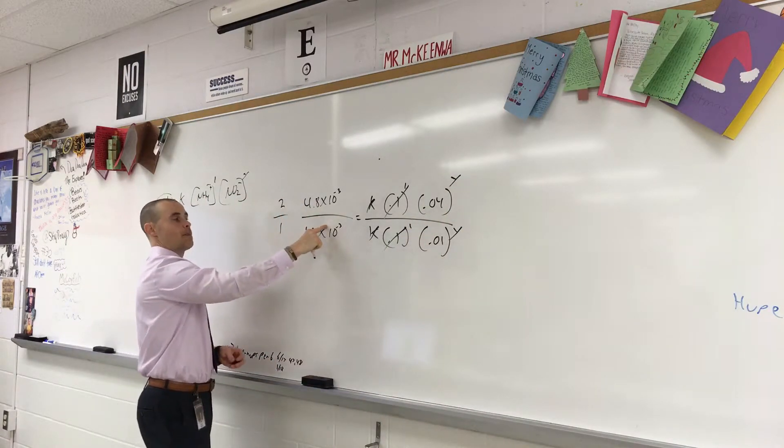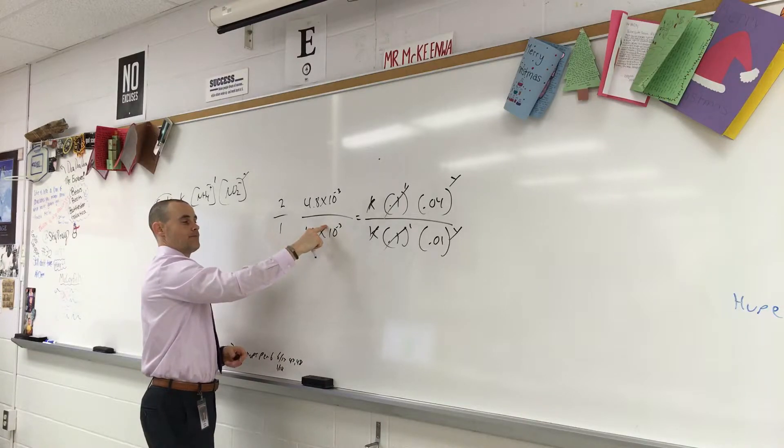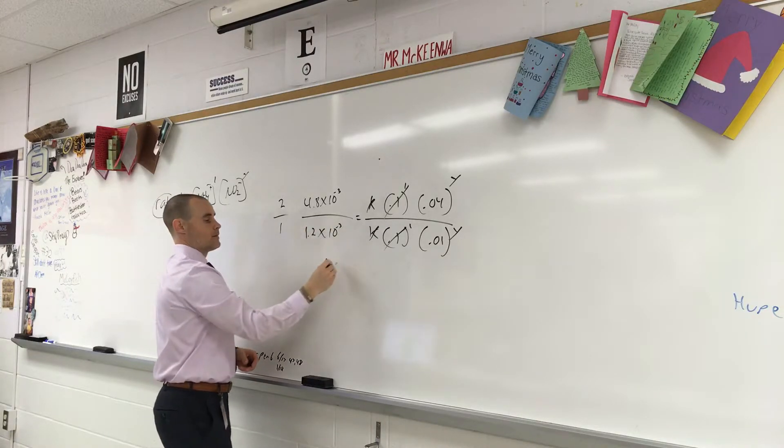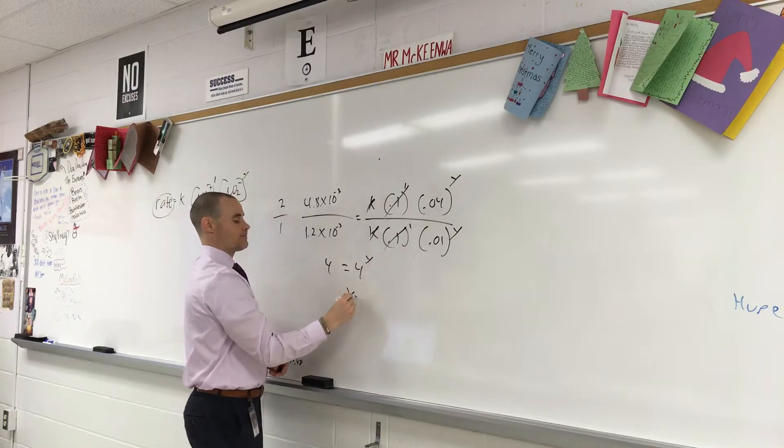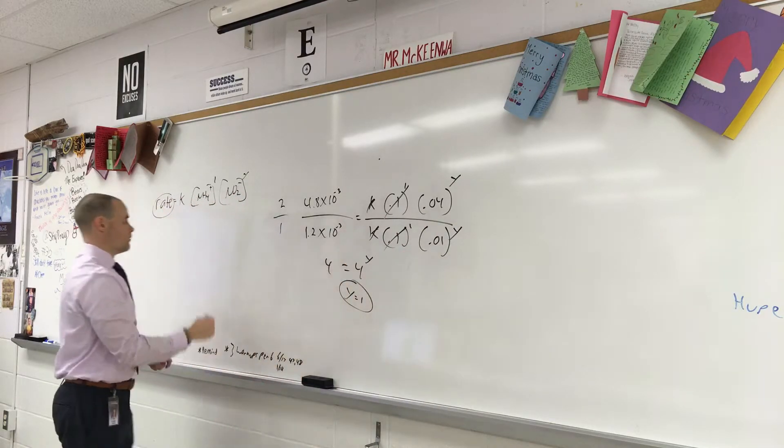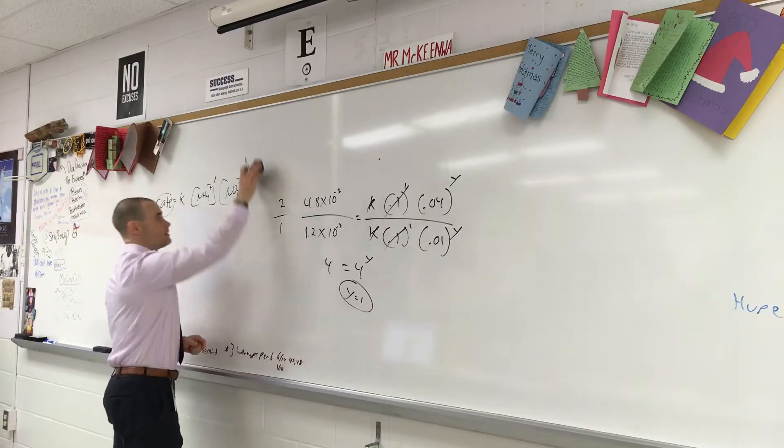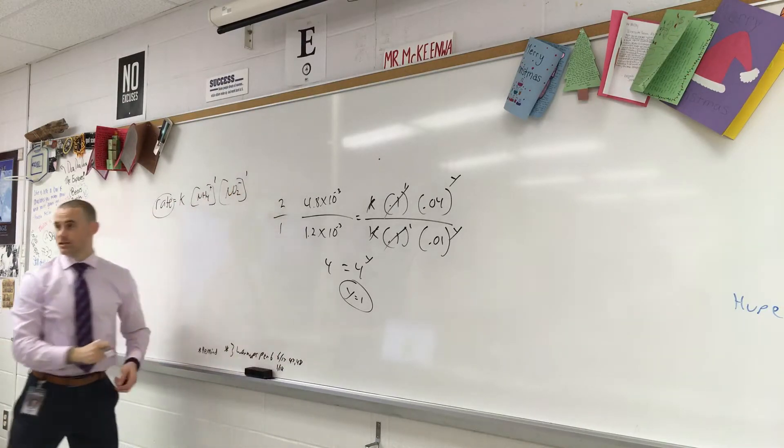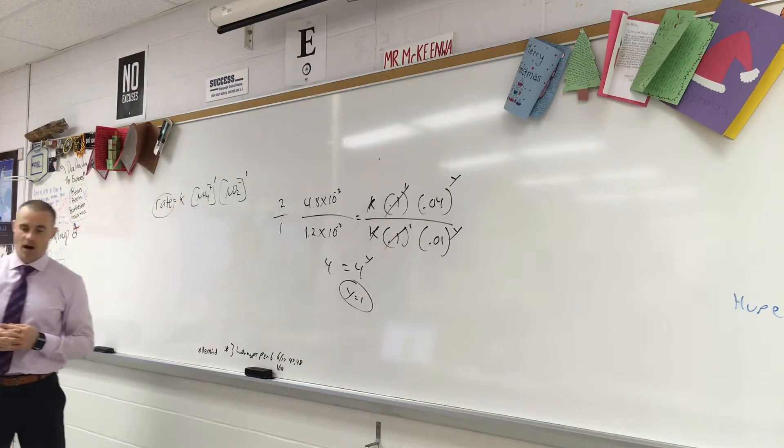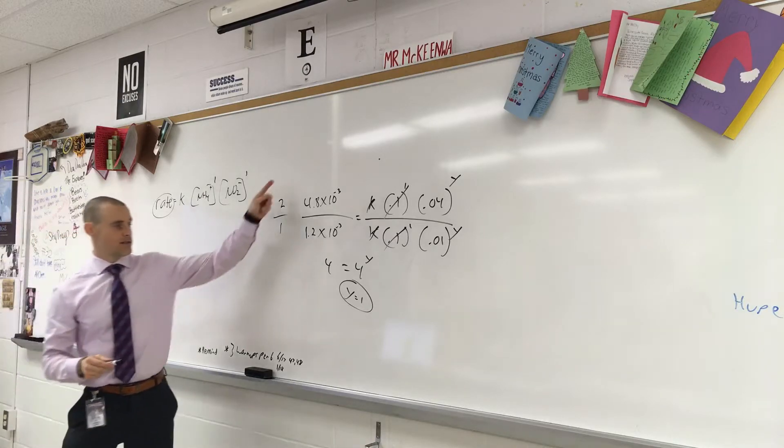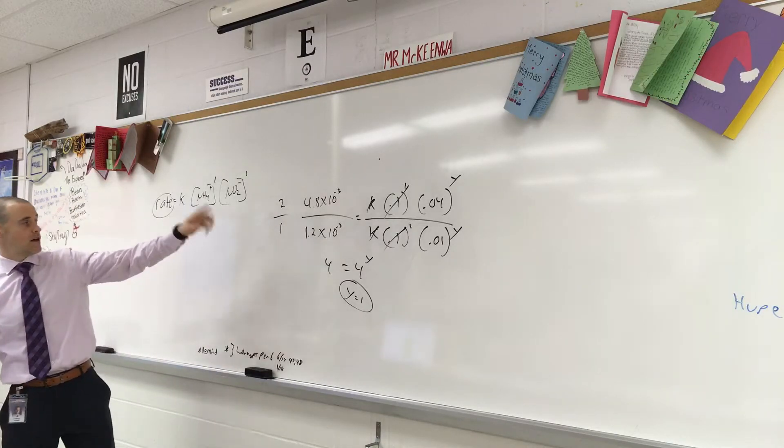And then this is 0.04 to the y and 0.01 to the y. So what's this divided by this? 4. What's this divided by this? 4. So y is 1. So the rate law for this reaction, and this was in the homework, the exact same reaction. There it is. Rate equals k times NH4 plus to the first power, NO2 minus to the first power. So you need to write this in your notes. Make sure you have this down, how to do this.